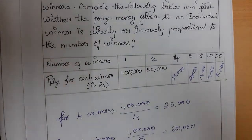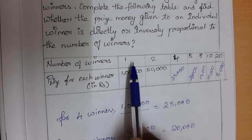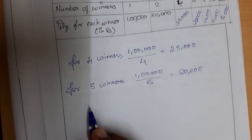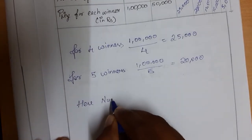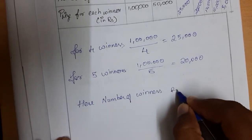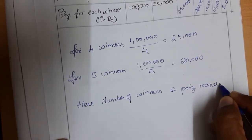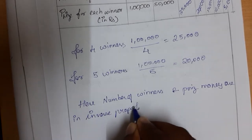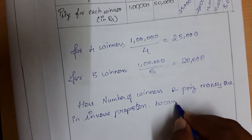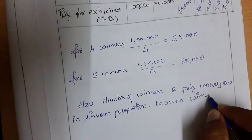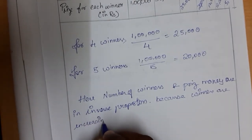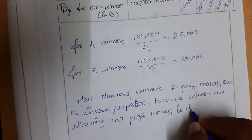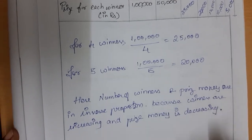It is obviously inverse proportion, since the number of winners is increasing but the prize money per person is decreasing. Therefore, number of winners and prize money are in inverse proportion because the number of winners is increasing and prize money is decreasing.